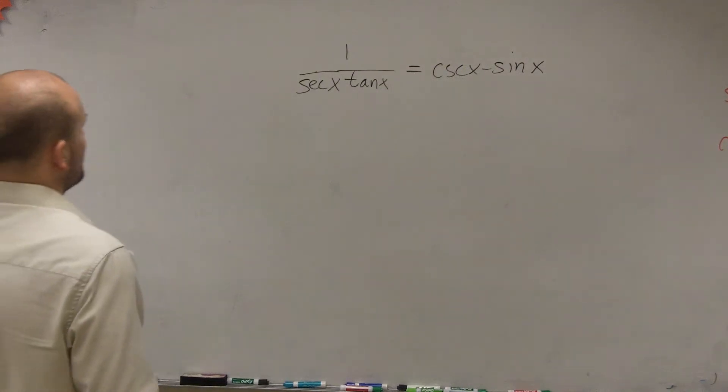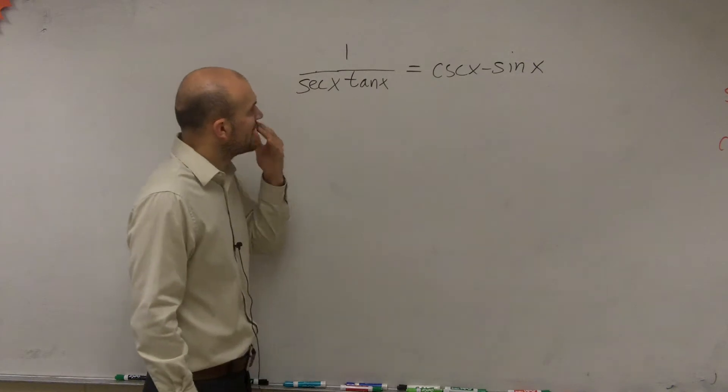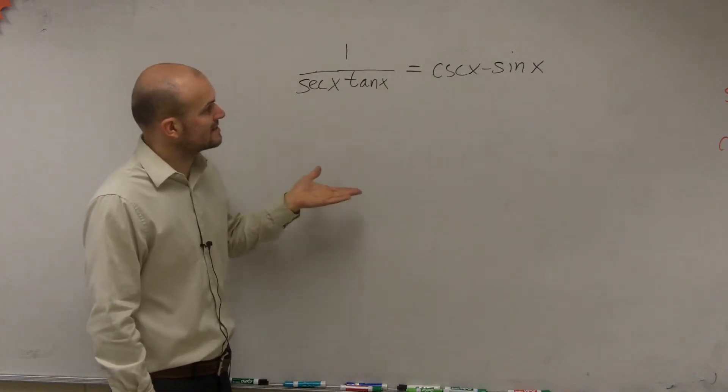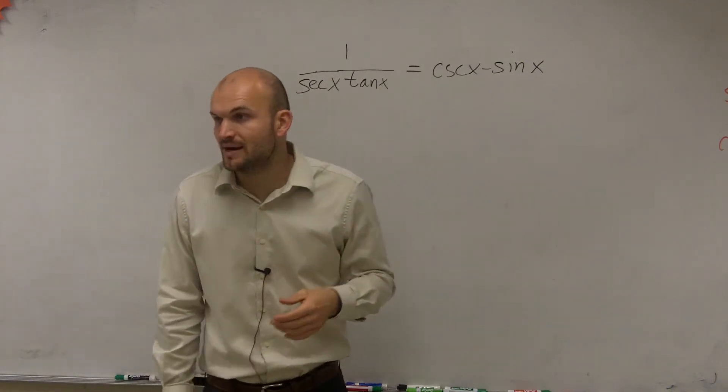So ladies and gentlemen, when working through these problems, I have 1 divided by secant of x times tangent of x equals cosecant of x minus sine of x.